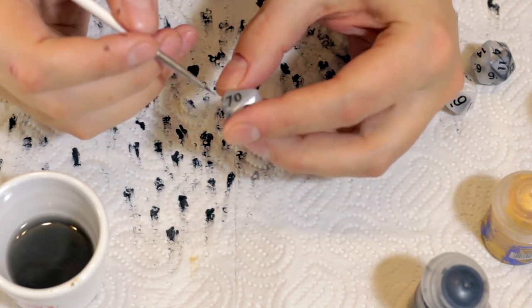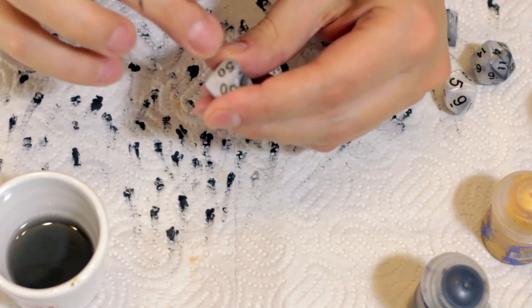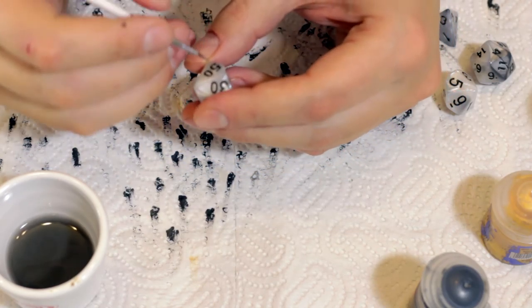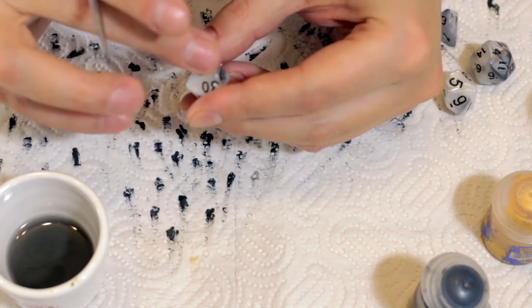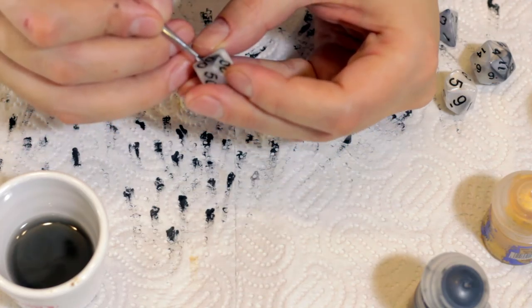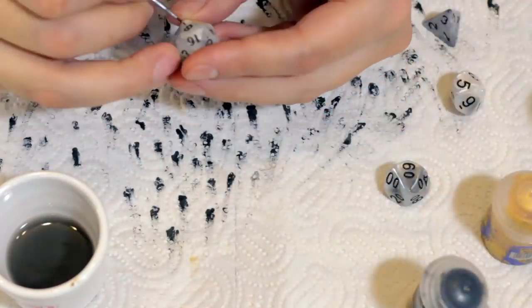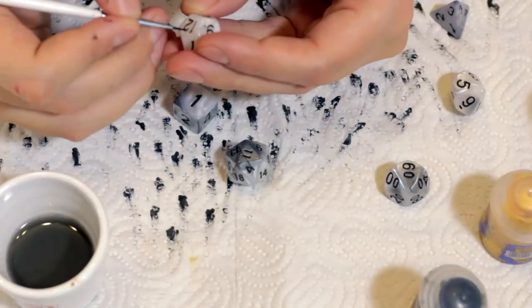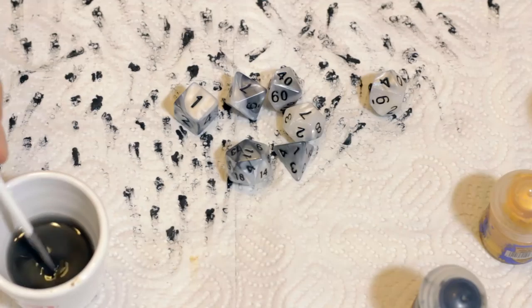Alright, now I'm finishing up the last details on these dice. And the thing is that I realized that when I thin the paint a little bit, it covers the corners of the grooves much better. And now I'm trying to find where there are still little golden under layers visible.